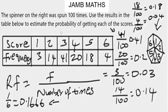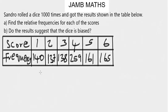Now let me give you a practice question to test your knowledge. Sandro rolled a dice 1000 times and got the results shown in the table below. Find the relative frequencies for each of the scores. Do the results suggest that the dice is biased? Feel free to pause and attempt this before we solve it.